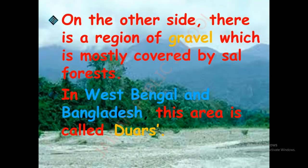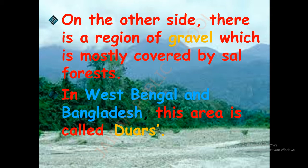On the other side there is a region of gravel mostly covered by soil forest. As shown in the backdrop, a sandy structure is present with trees completely grown throughout — this is soil forest covered by gravel-like sands with different kinds of trees. In West Bengal and Bangladesh, these areas are called Duars.